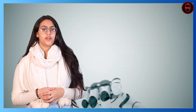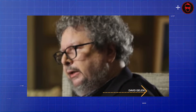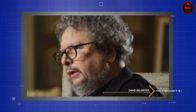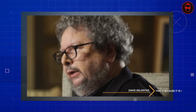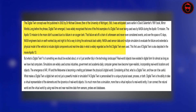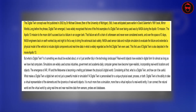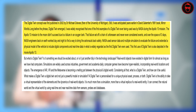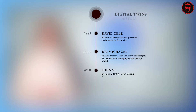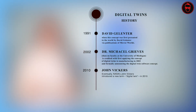Whilst understanding the modern-day digital twins, let me take you back to when this concept started. Looking back at 1991, when this concept was first presented to the world by David Glenter via publications of mirror worlds. However, Dr. Michael Grieves, then on the faculty at the University of Michigan, is credited with first applying the concept of digital twins to manufacturing in 2002, and formally announcing the digital twin software concept. Eventually, NASA's John Vickers introduced a new term, digital twin, in 2010.